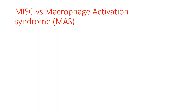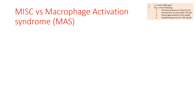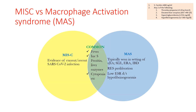Macrophage Activation Syndrome is a type of — or rather, similar to — HLH. It is defined by serum ferritin more than 684 nanograms per ml, and any two of the following four laboratory criteria: thrombocytopenia, elevated liver enzymes, hypertriglyceridemia, and hypofibrinogenemia. Common features with MIS-C include fever, increased serum ferritin, elevated liver enzymes, and cytopenia.